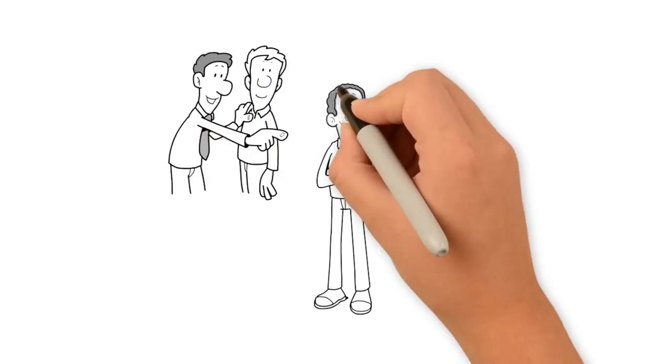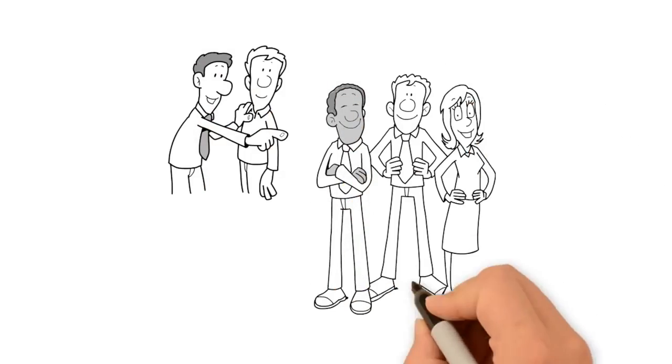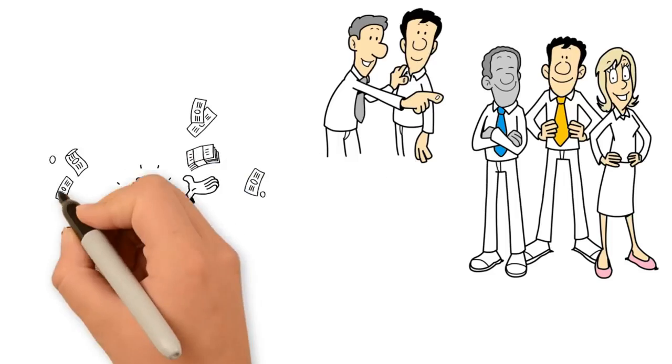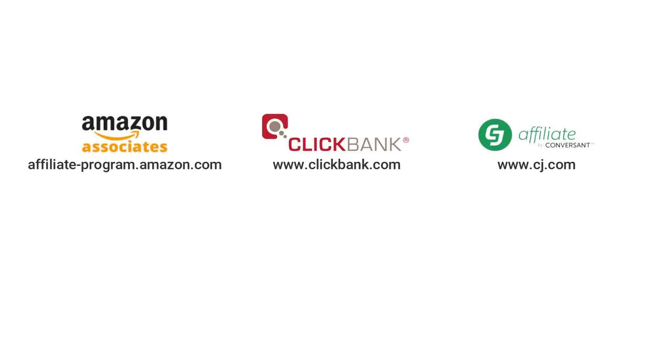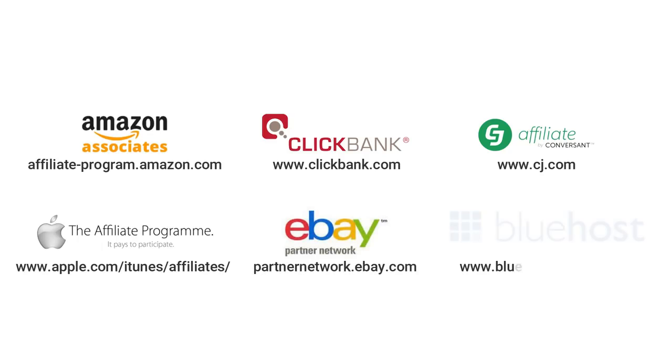Number 2: Affiliate Marketing. By recommending other people's products and simply getting affiliate links in front of a target group of people, you earn a commission on every sale. Clickbank.com, Affiliate-Program.amazon.com, CJ.com, Apple.com/iTunes/affiliates, Partnernetwork.ebay.com, Bluehost.com/affiliate.